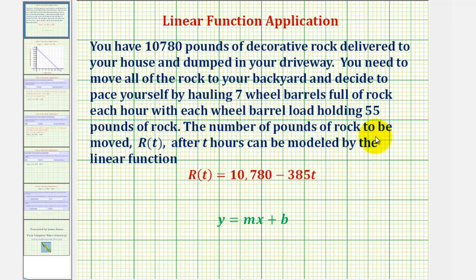The number of pounds of rock to be moved, R(t), after t hours can be modeled by the linear function R(t) = 10,780 - 385t.